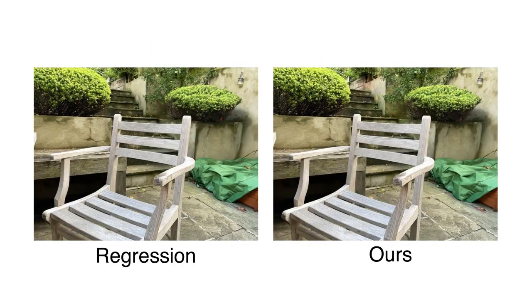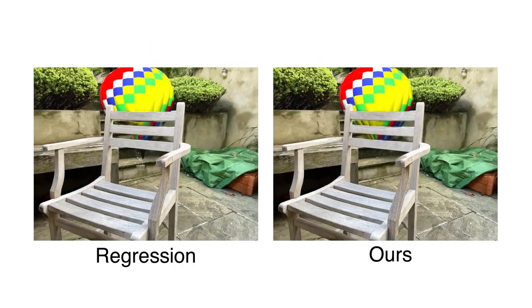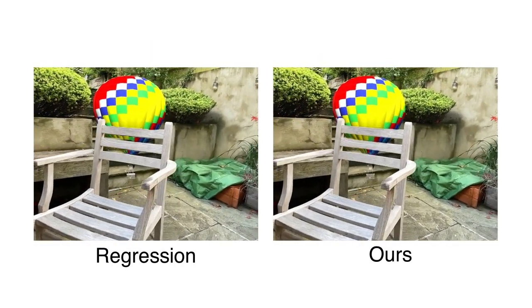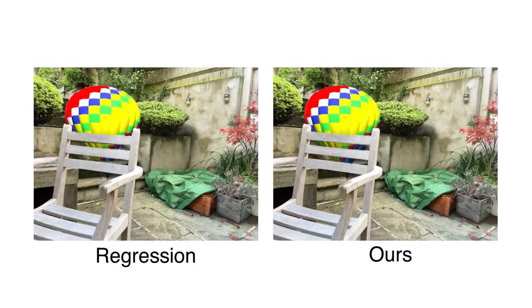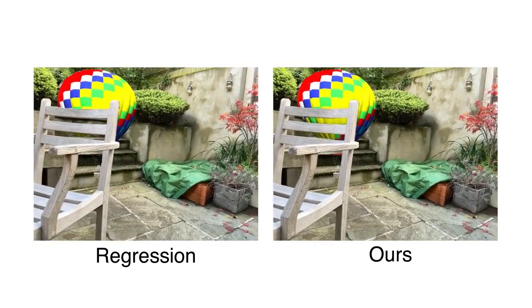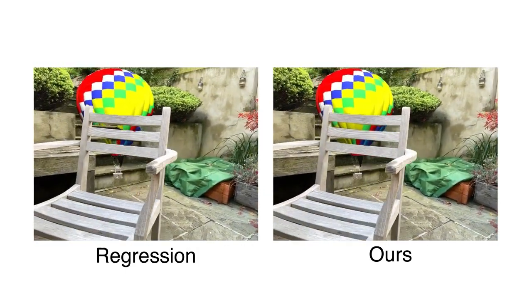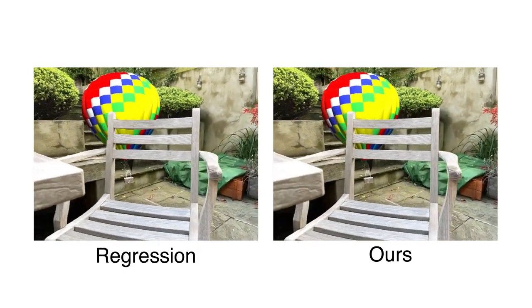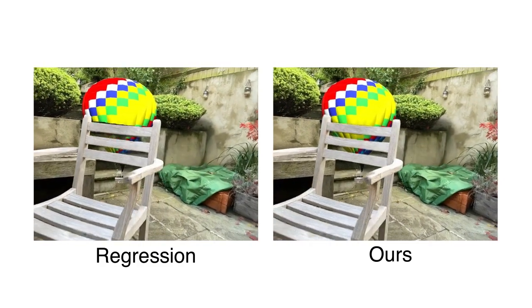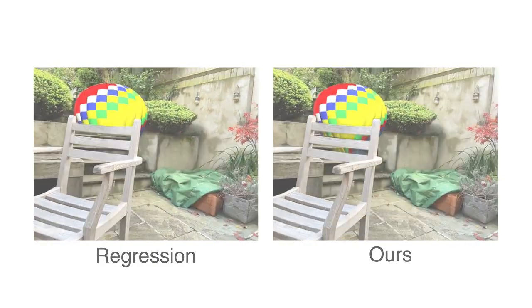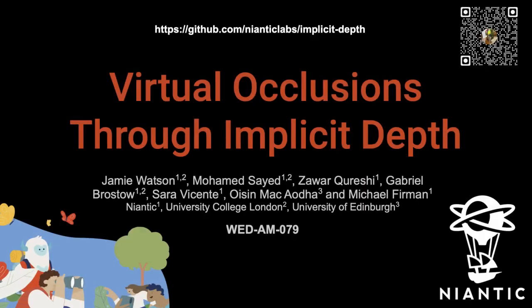For immersive experiences, occlusions must not only be accurate but also stable between frames. By posing the problem as binary segmentation, we can efficiently enforce temporal consistency in our predictions with minimal computational overhead. Code is available from our project website. For more details, please consult the paper or continue watching as we discuss the method in more depth.